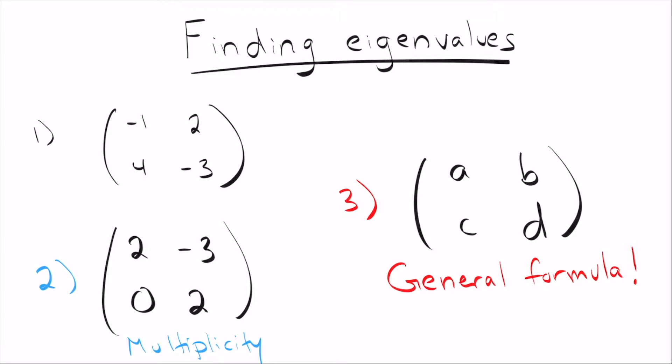In this video, we'll talk about how to find the eigenvalues of 2x2 matrices. We'll start with a simple example for those who've never found eigenvalues before. Then we'll cover the multiplicity of an eigenvalue. Finally, we'll derive a general formula that works for any 2x2 matrix — just plug in the numbers and it gives you the correct eigenvalues.